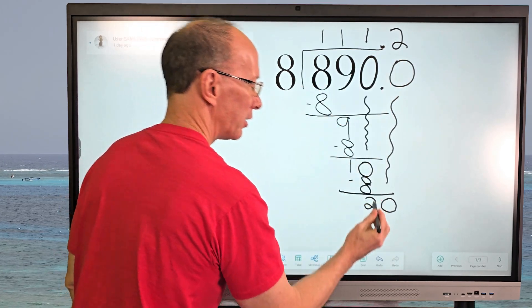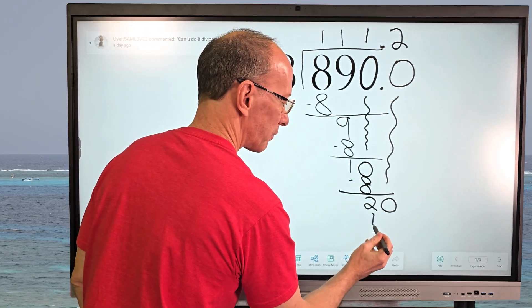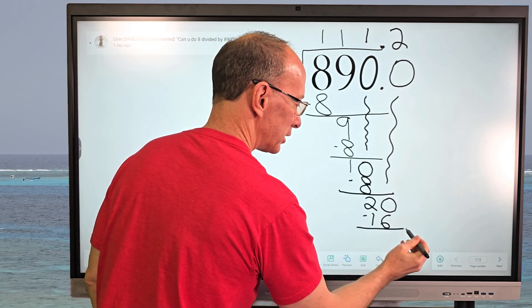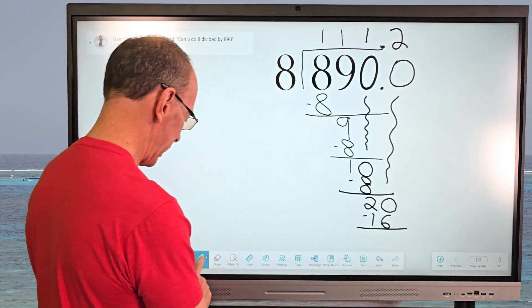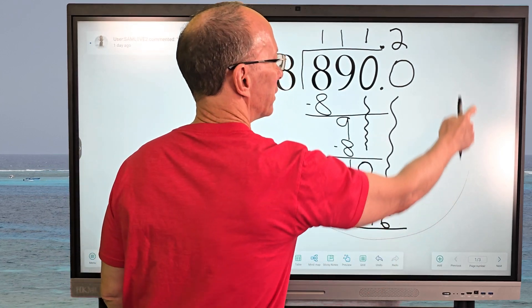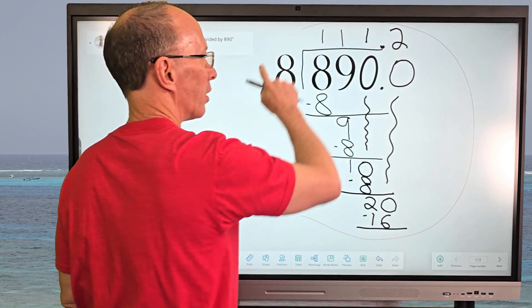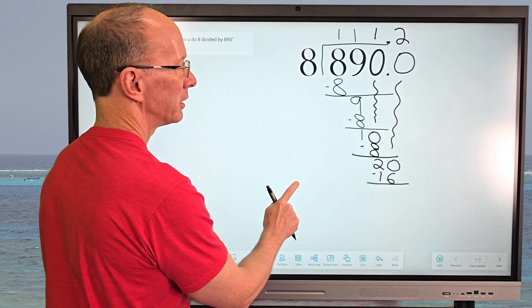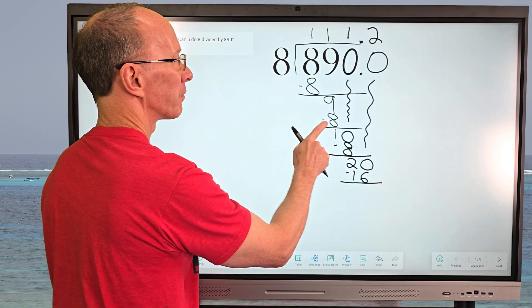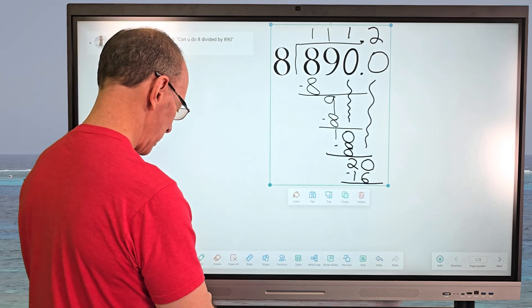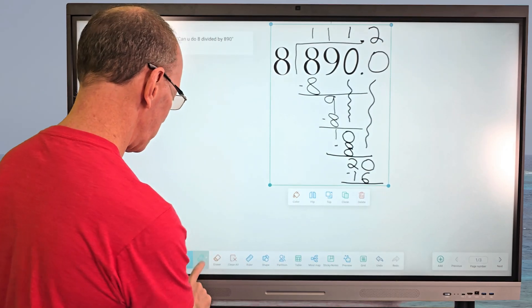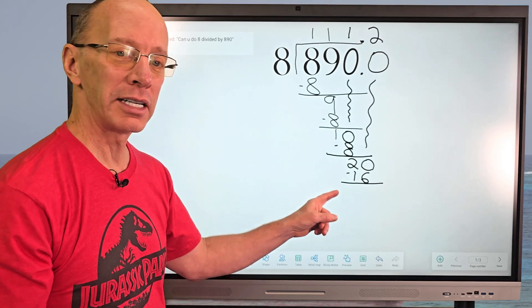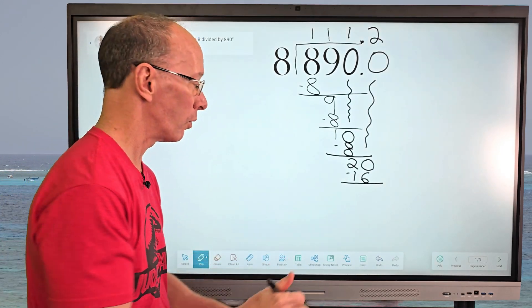So 2 times 8 equals 16, right here. Then I subtract: 20 minus 16 equals 4. I put 4 right here.